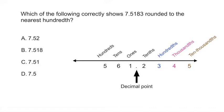Here they're asking you the nearest hundredths. If you look at your number, you want to round to the nearest hundredths. If you look to the right, there's a number 8, which means that we're going to round up, and the correct answer would be 7.52, because we're rounding that 51 up to 2.